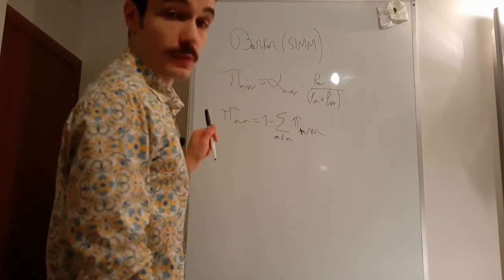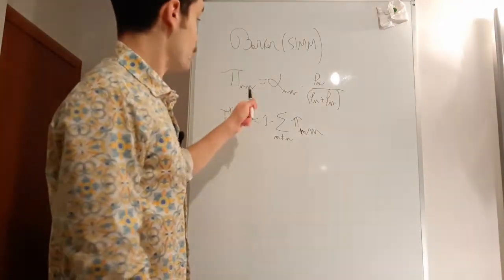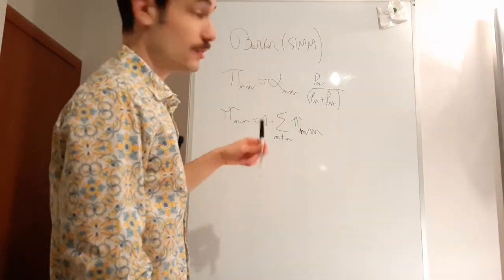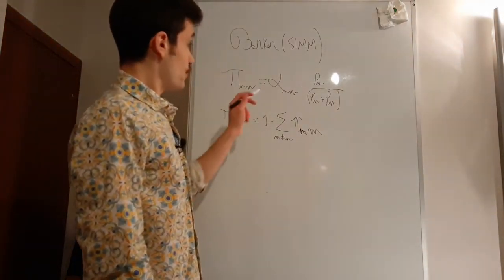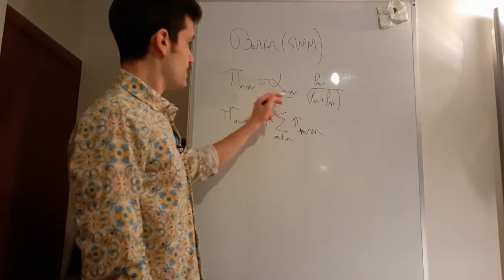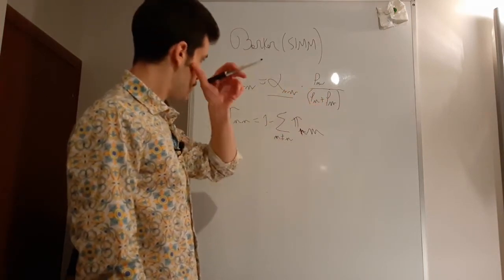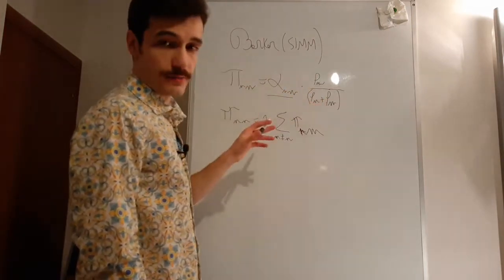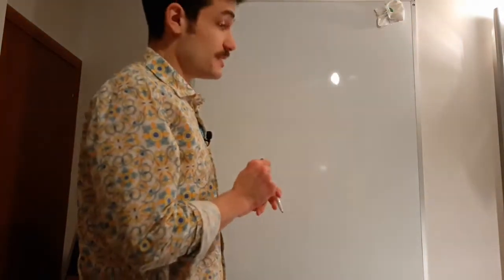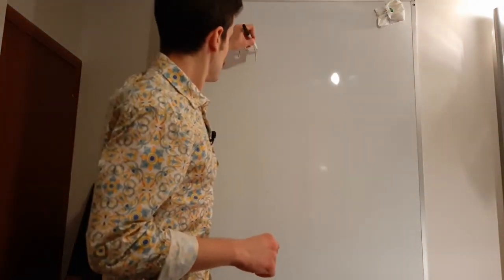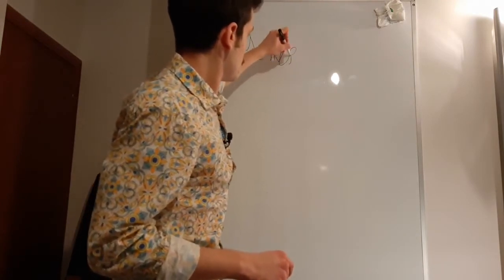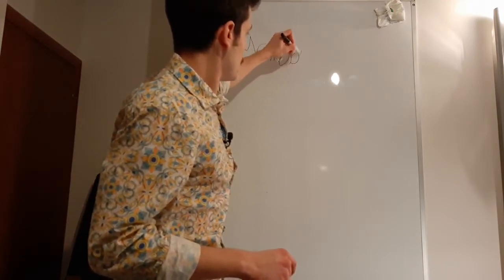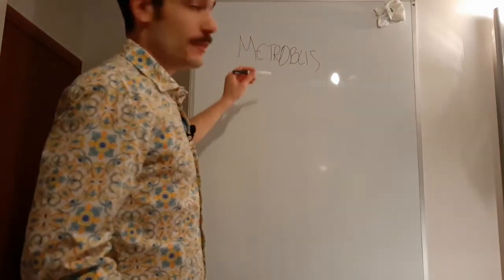But that's not the approach that is usually used — not the most popular one at least. We will come back to what those rho values are. Actually, the most popular solution is the Metropolis algorithm.